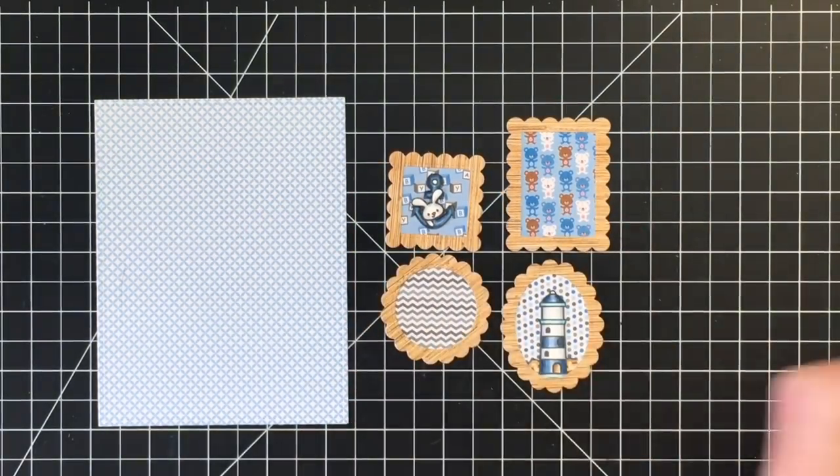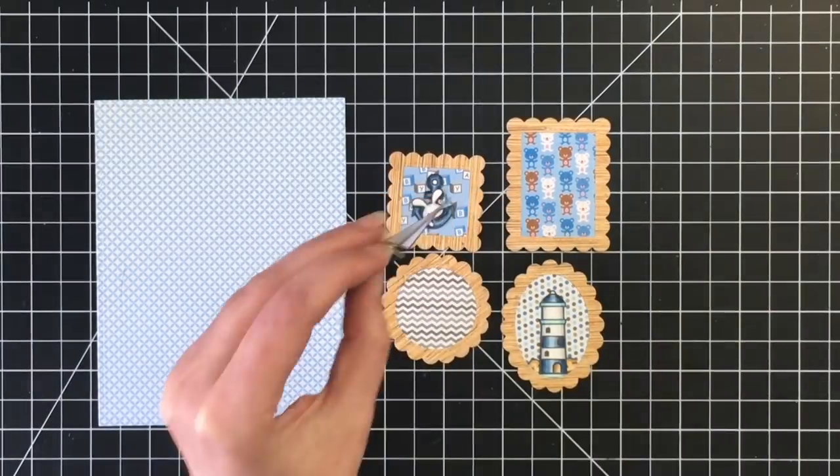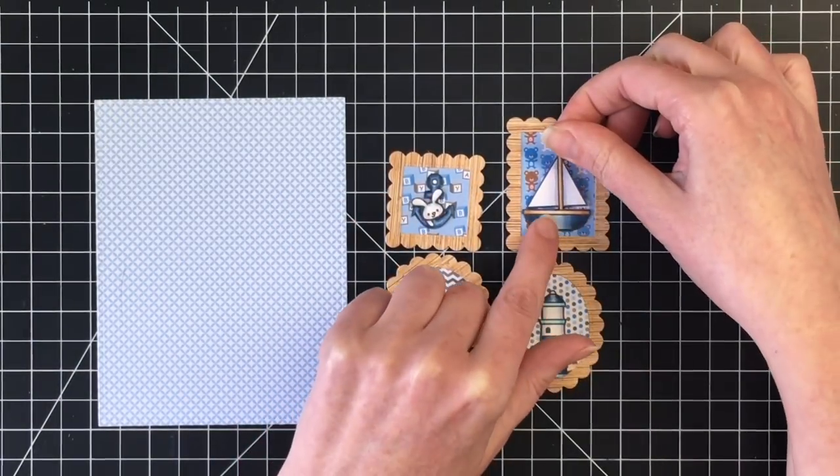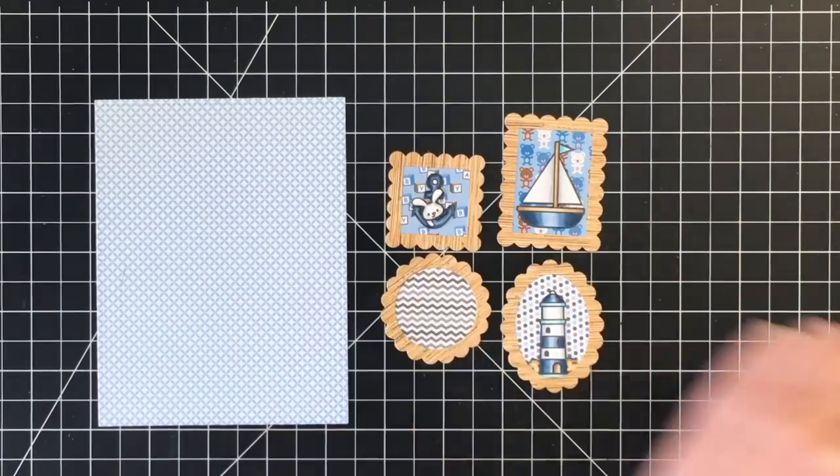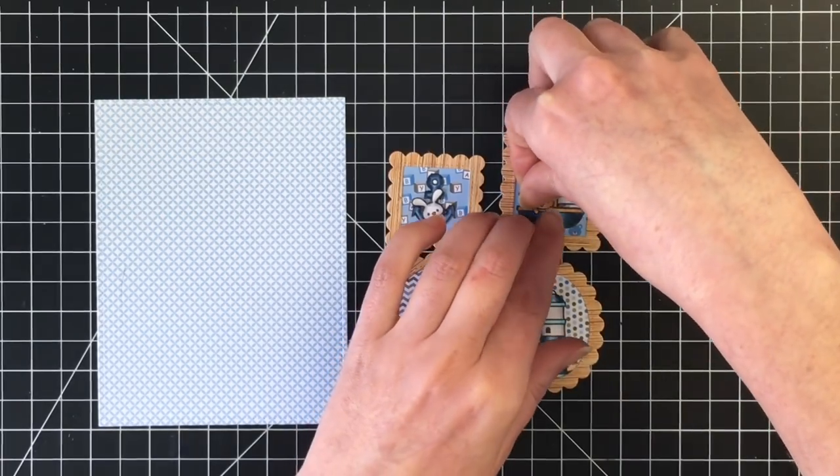I'm going to add him to the little square frame. For the tall rectangular frame I'm going to add the mini sailboat and then the little bear onto the sailboat.